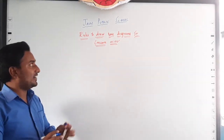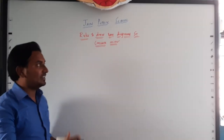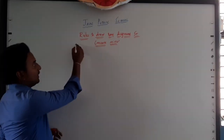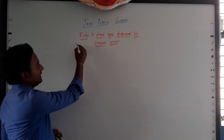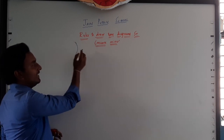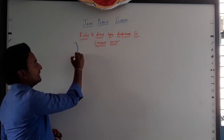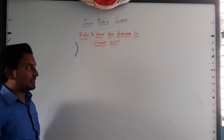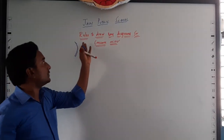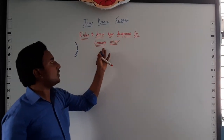Yes kids, as we have discussed about concave mirror already, I just want to show you how this looks. As you can see, it bulges inwards — bending inwards. Keep in mind that this is a mirror. So in this class we will discuss about rules to draw ray diagrams for a concave mirror.